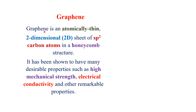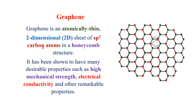Graphene is an atomically thin two-dimensional sheet of sp2 carbon atoms and its structure looks like a honeycomb. It has many desirable properties such as high mechanical strength, electrical conductivity, and many more.